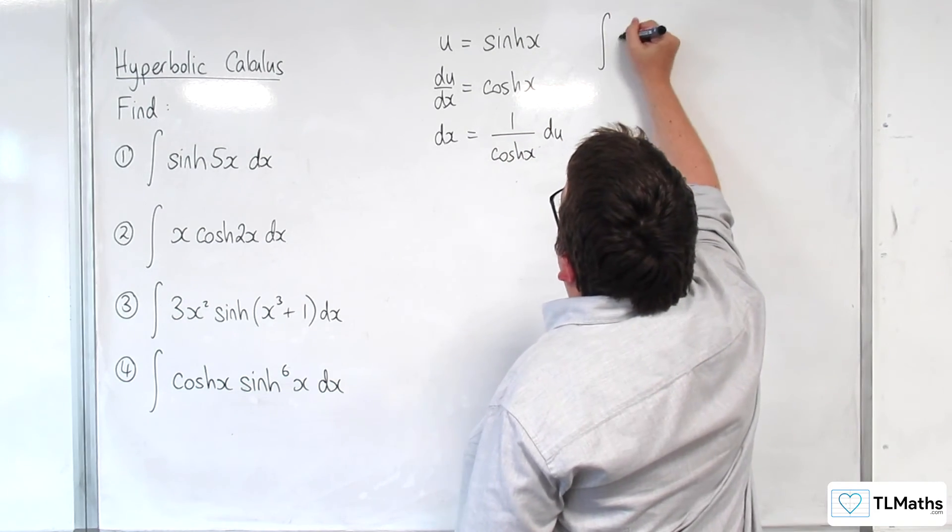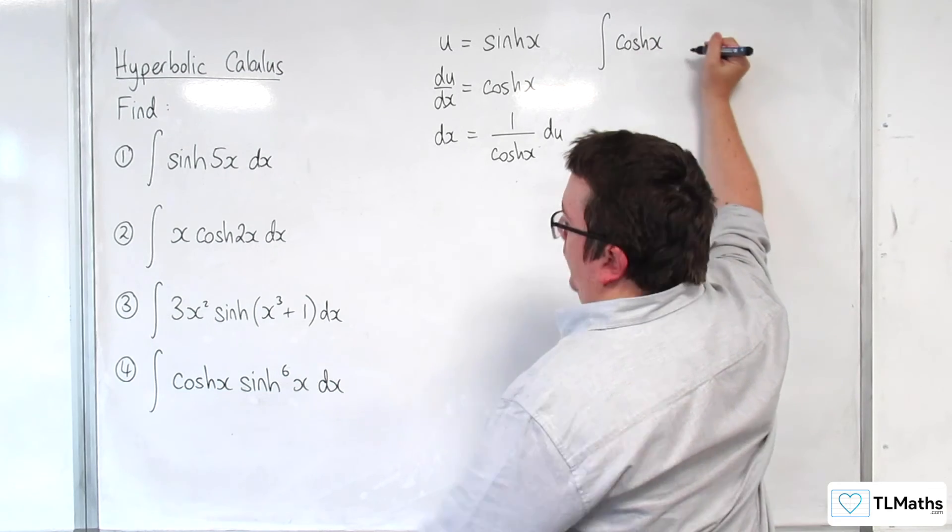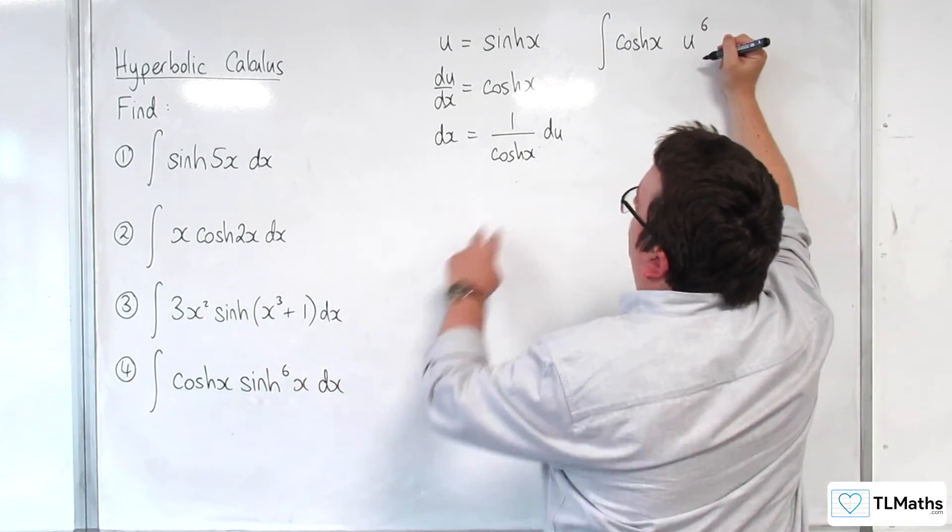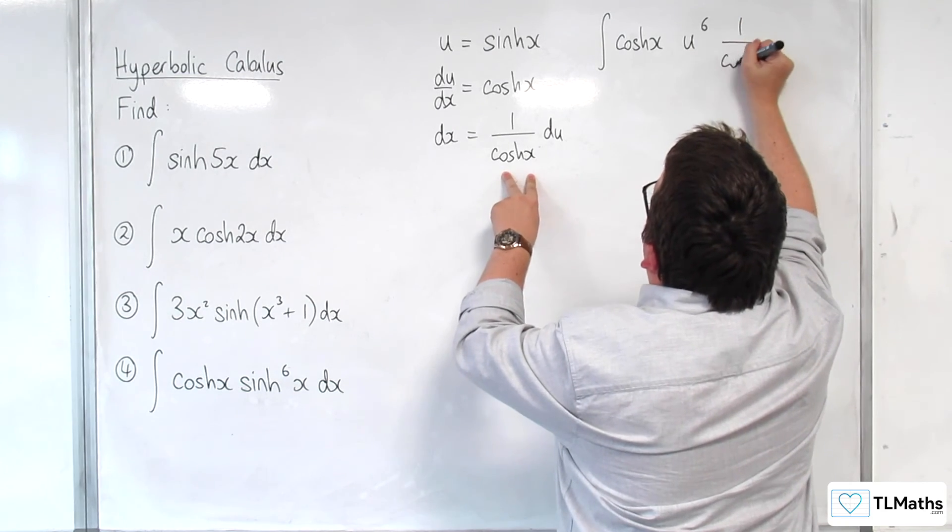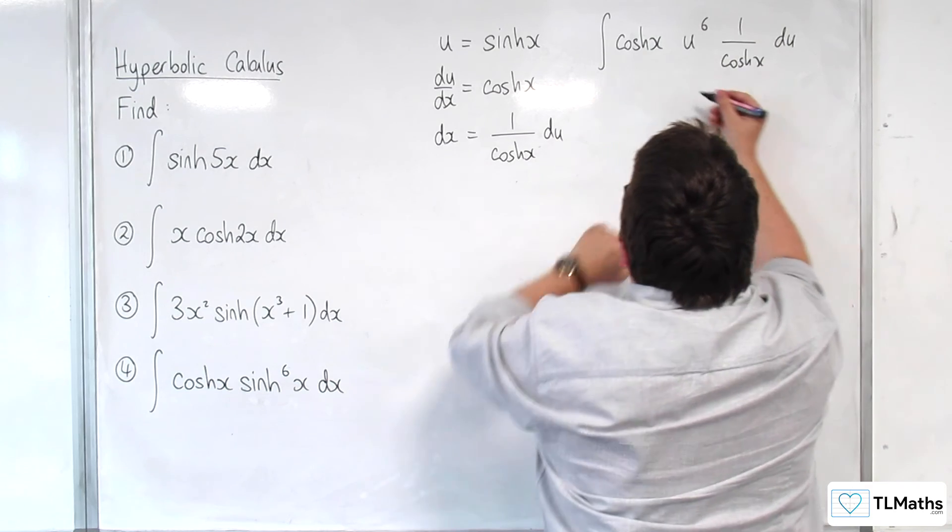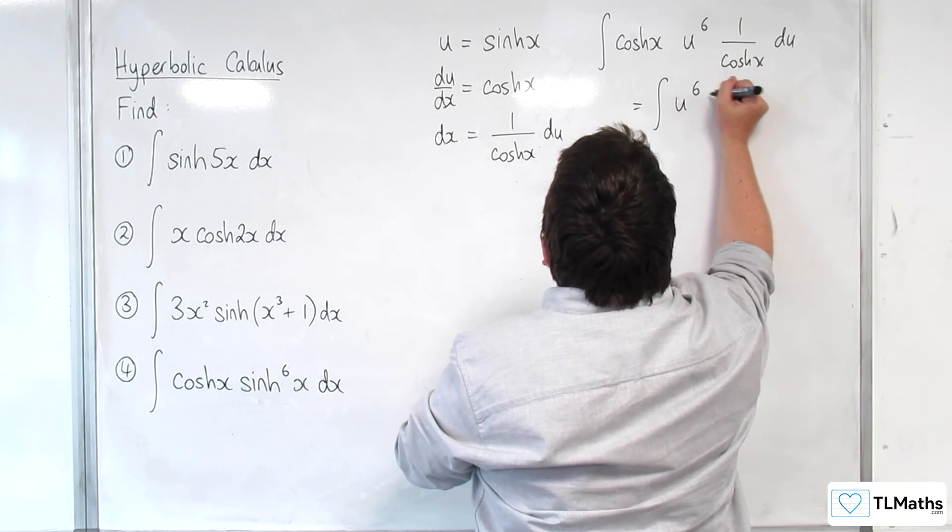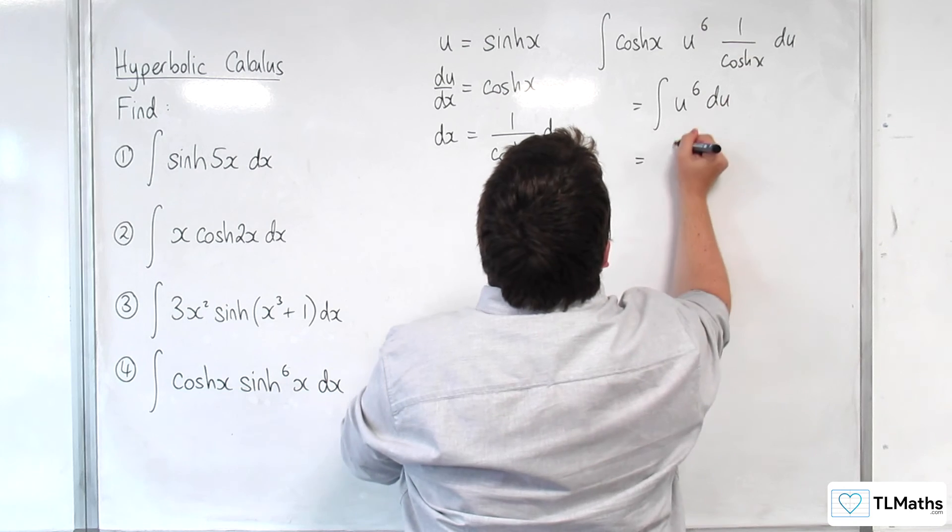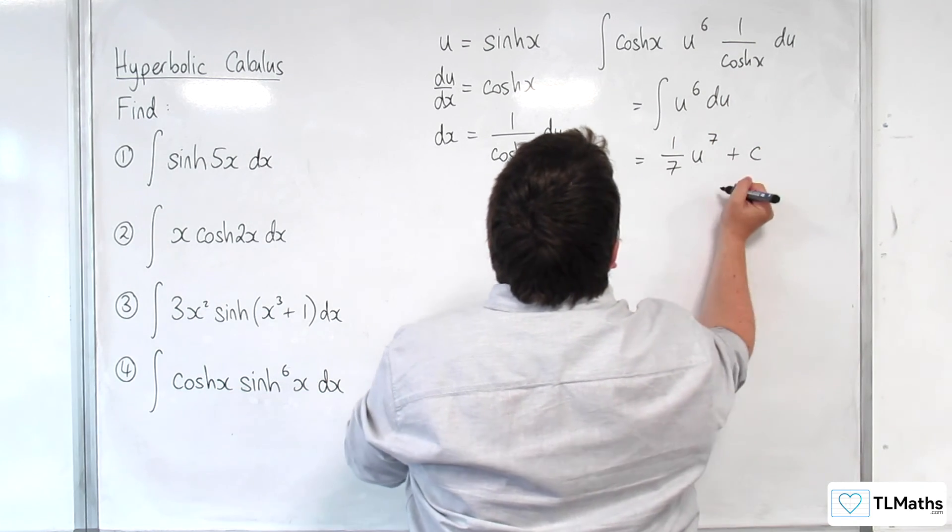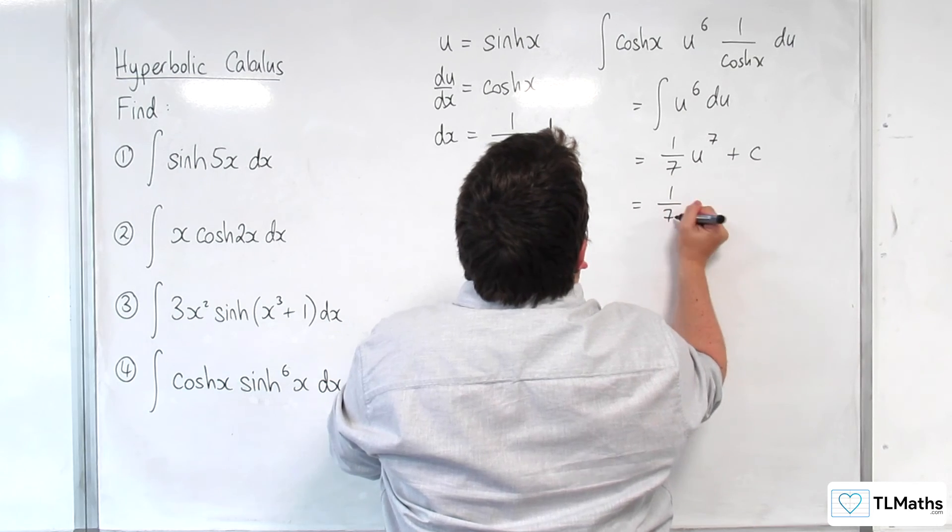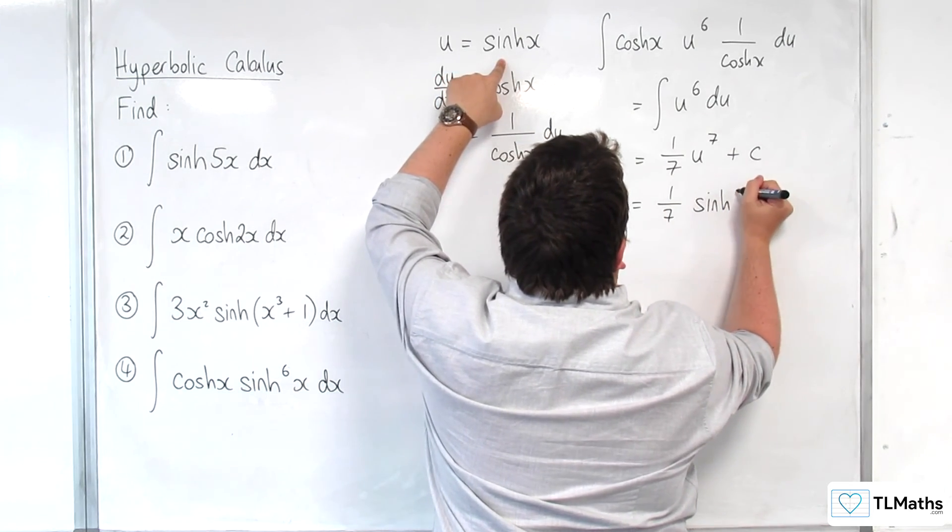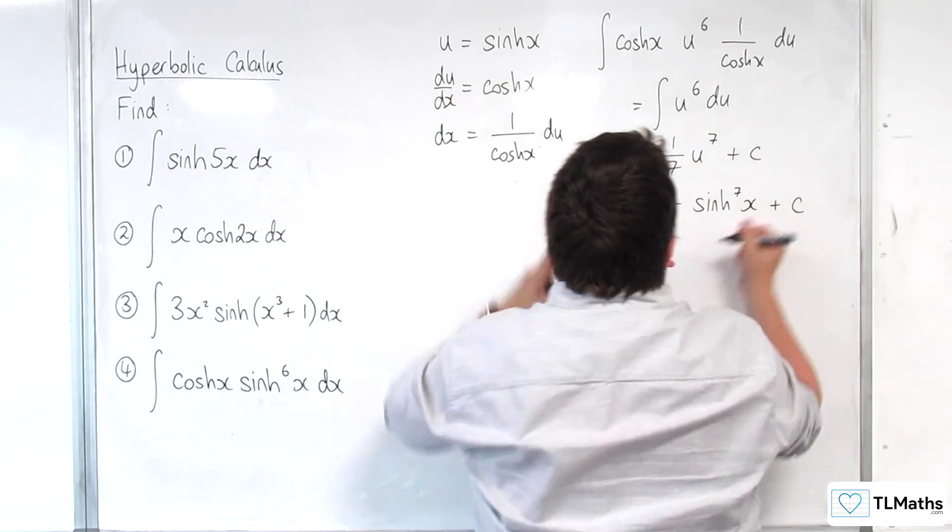So we have the integral of cosh x. We've got u to the power of 6, and the dx is replaced with 1 over cosh x du. That's where the cancellation comes in. So we've got the integral of u to the 6 du, which is one-seventh u to the 7 plus c. And then pop back in the u. So we've got one-seventh sinh to the 7 x plus c.